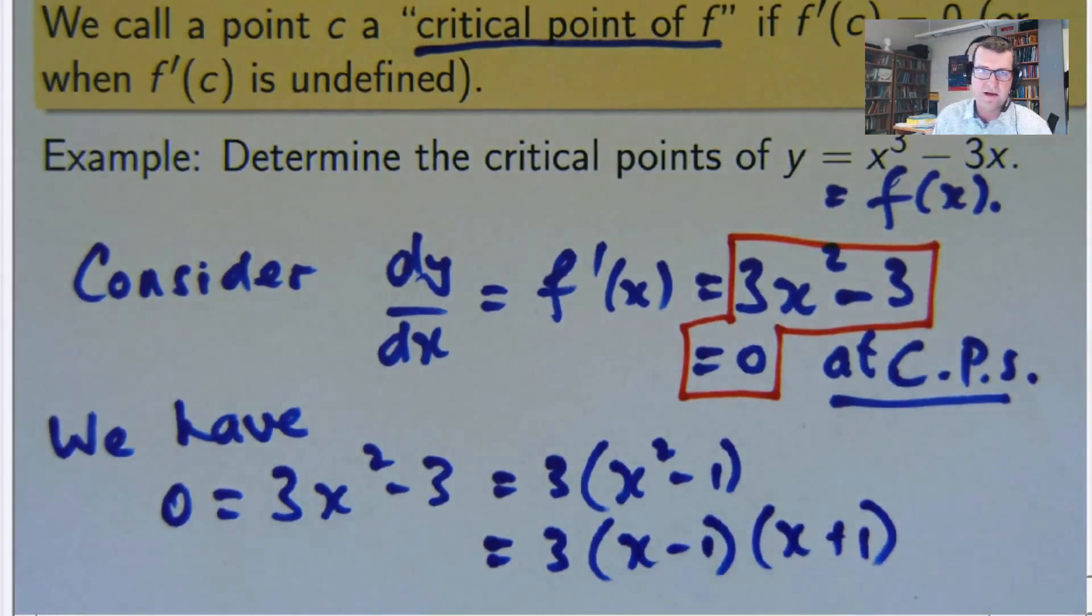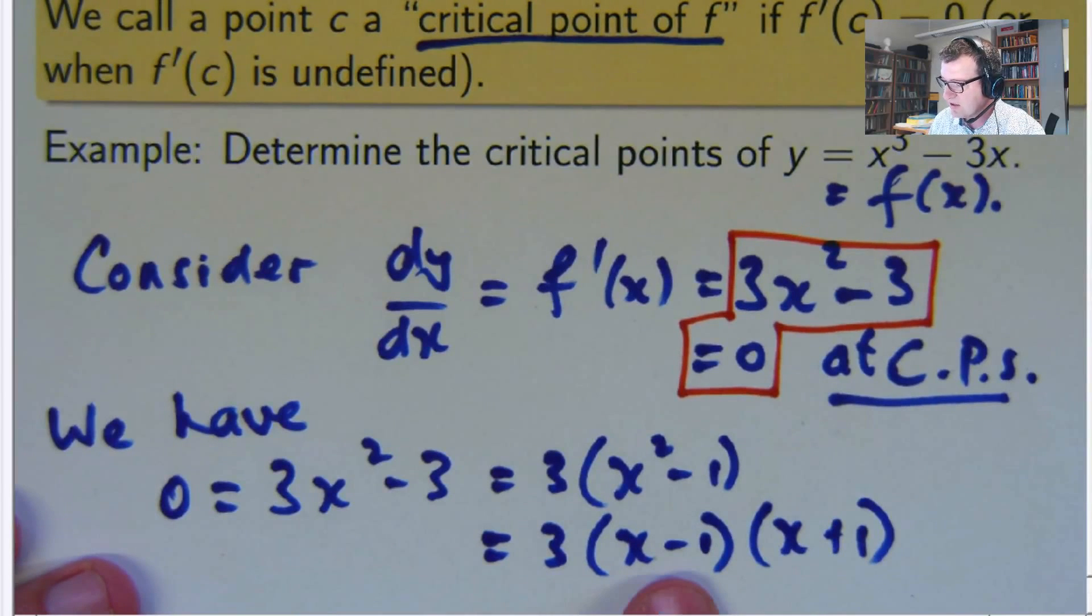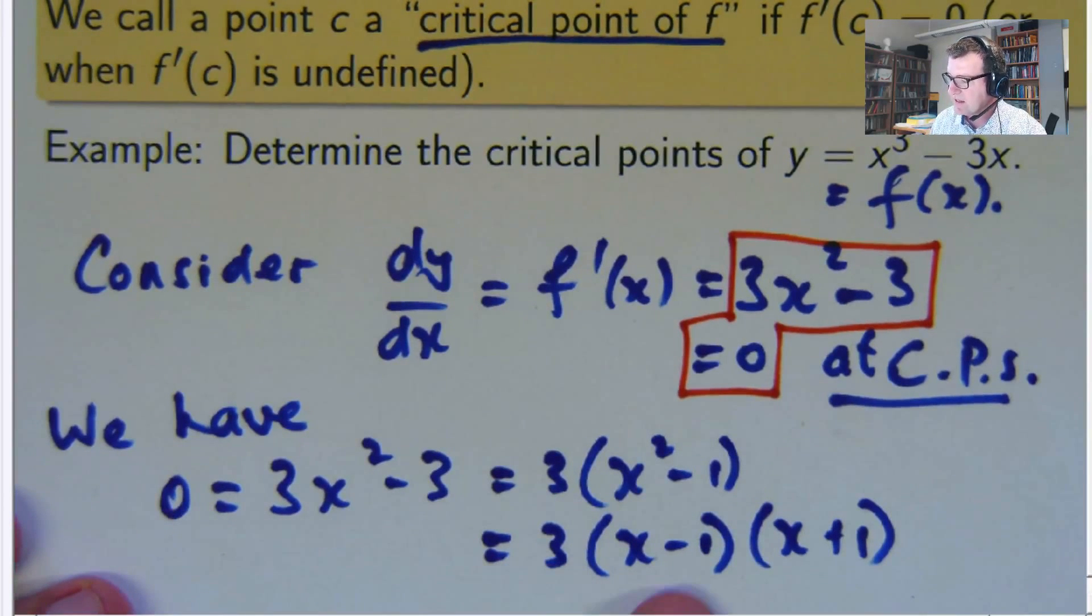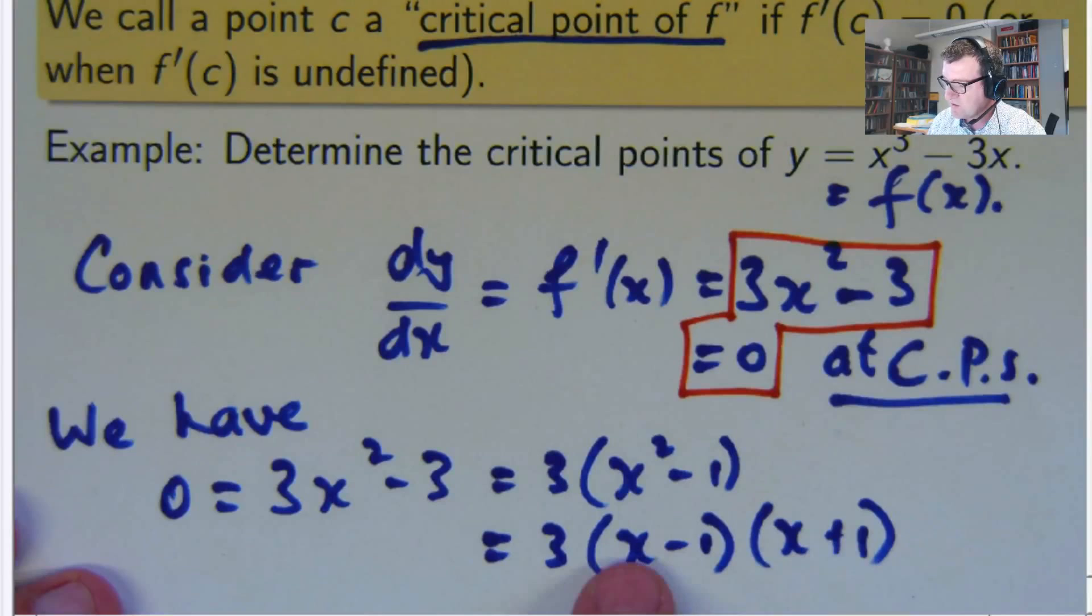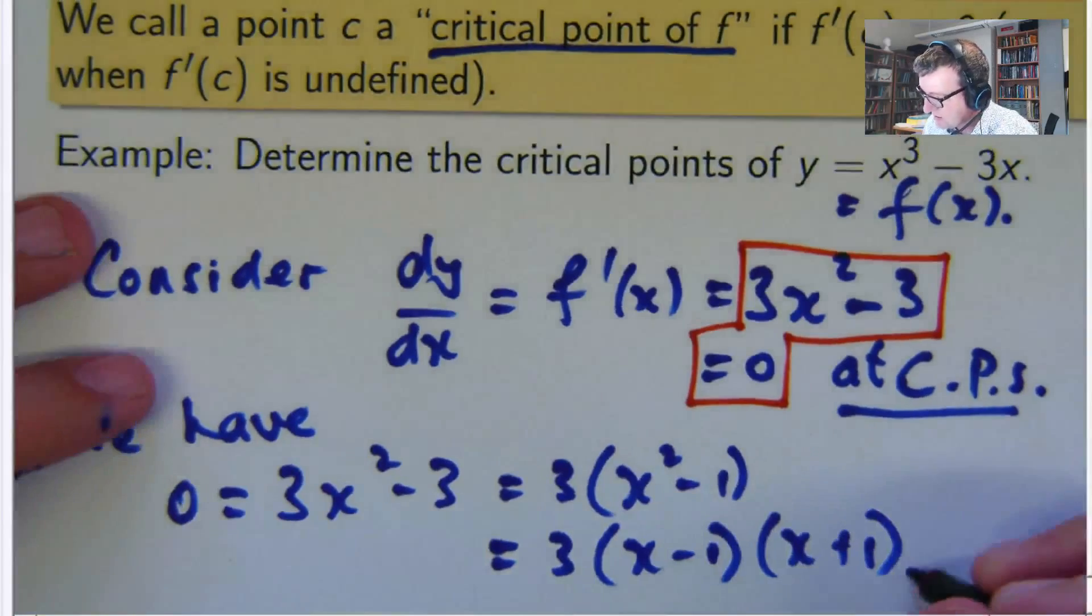So now we have this product is equal to 0. So that means that 3 equals 0, x minus 1 equals 0, or x plus 1 equals 0. Obviously, 3 can't be 0. So either x minus 1 is 0 or x plus 1 is 0. So if I have two equations there that I can solve, x minus 1 equals 0 is the same as x equals 1. x plus 1 equals 0 is the same as x equals negative 1. So there are critical points.